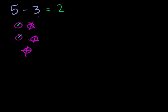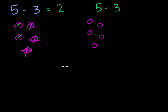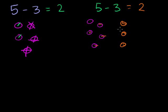Now the other way to visualize 5 minus 3 is to think about what the difference between 5 and 3 is. So let's say I have 5 berries: 1, 2, 3, 4, 5. And let's say that you have 3 berries in a slightly different color. Another way to think about 5 minus 3 is: how many more berries do I have than you? I have 2 berries that you don't have, so I have 2 more berries than you.